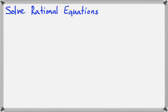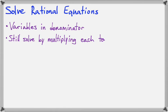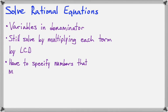In this lesson we're going to look at how to solve rational equations. A rational equation is just an equation that has variables in the denominator. All of our rational equations in this video are going to turn out to be linear equations after we get rid of the denominators. We're going to solve by multiplying each term by the least common denominator, the same way we saw in the last lesson on solving linear equations containing fractions.